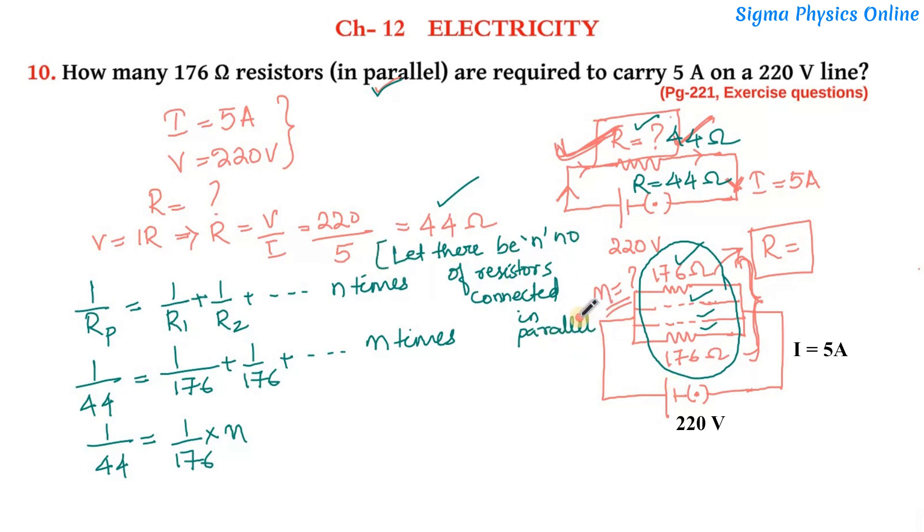I forgot to write this, so first you have to write this, then you can solve. Which is 1 by 44 equals 1 by 176 times n. So the value of n which we get here is 176 by 44, which is 4.